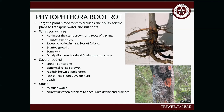Phytophthora root rot targets the plant's root system and its ability to transport water and nutrients. You'll see rotting of the stem crown and root of the plant, impacting many hosts with excessive yellowing, loss of foliage, and stunted growth. You'll see wilt and darkly discolored or dead feeder roots or stems. With severe root rot, you'll see stunted or wilting growth, abnormal foliage growth, reddish-brown discoloration, lack of new shoot development, and possibly death of the tree. The cause is too much water. Correct the irrigation problem — yes, you need to water trees during drought, but there comes a point when the water is too much and can cause more damage.